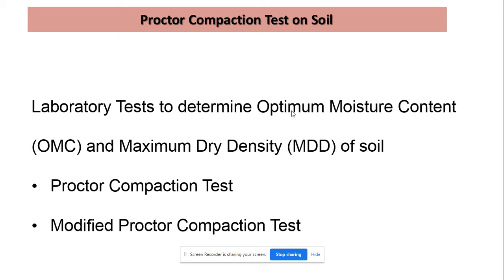When we go to the field and have to compact the soil for laying a foundation or a road, we have to maintain the optimum moisture content so that we can achieve maximum dry density of soil. Between the standard Proctor compaction test and the modified Proctor compaction test, there is very little difference — only the specifications are different; the rest of the procedure remains the same.